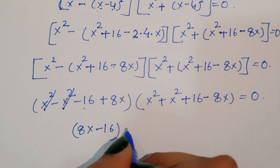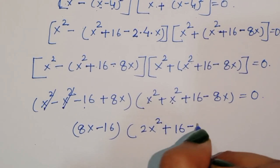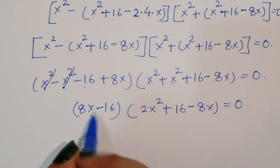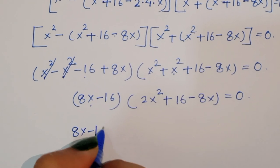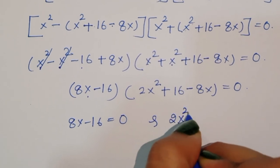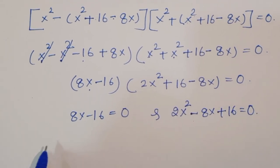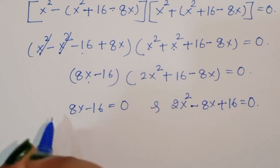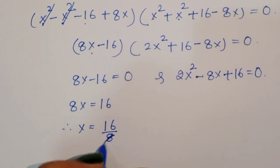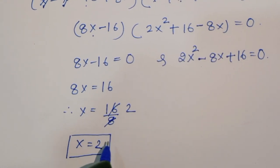So the first equation is 8x minus 16 equals 0, and the second is 2x square minus 8x plus 16 equals 0. Solving the first: 8x equals 16, therefore x equals 16 divided by 8, so x₁ is equal to 2. This is the first value of x.